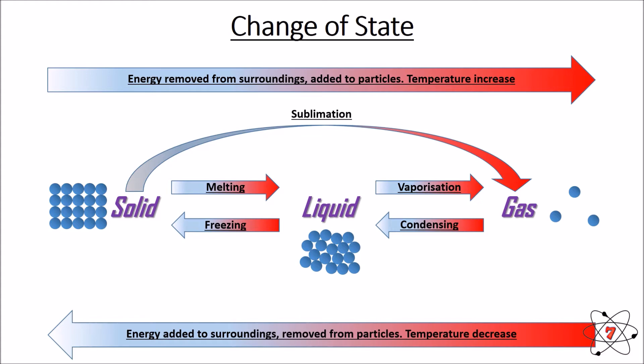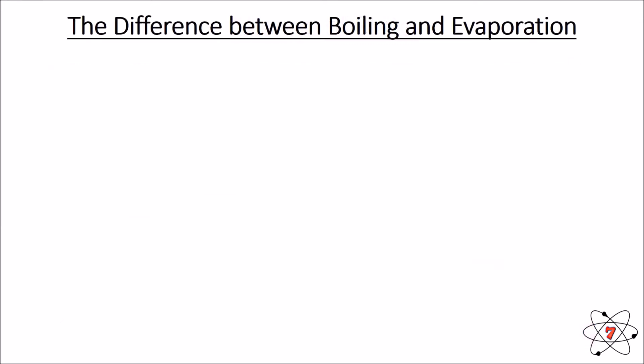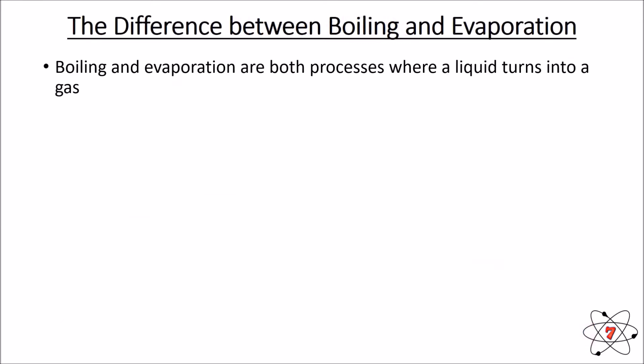We can move directly from a solid to a gas if the conditions are correct — this is called sublimation. We can also move directly from a gas to a solid, and this is called deposition. It's quite rare to avoid the liquid stage, but it is possible. So sublimation is solid directly to gas, and deposition is gas directly to solid.